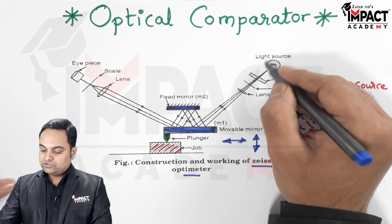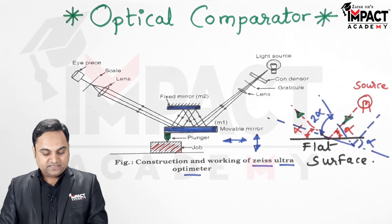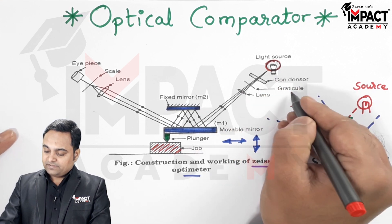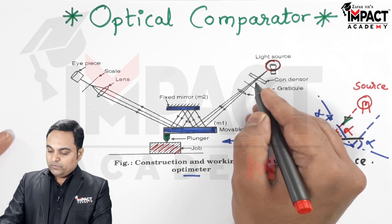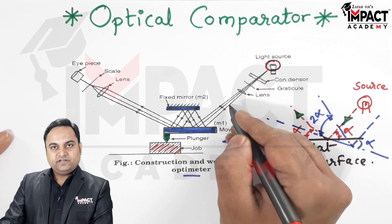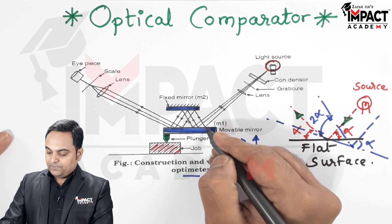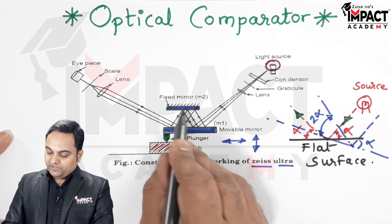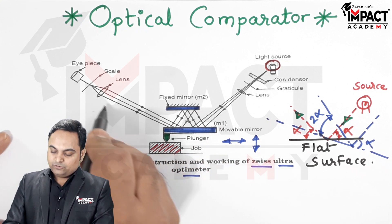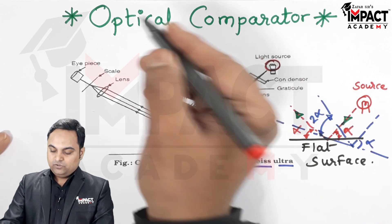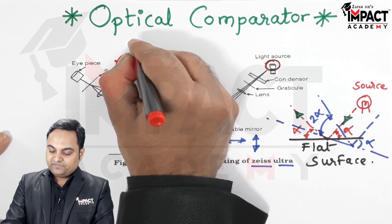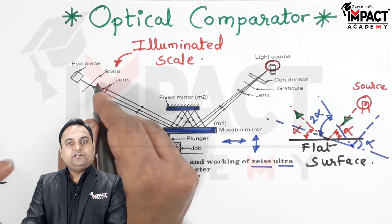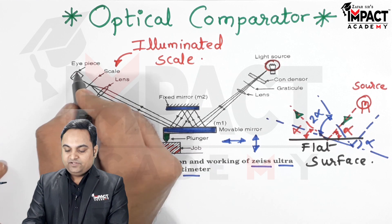There is also a light source through which light is impinged, passing through a condenser, graticule, and lens where the light gets focused and filtered. It is then impinged onto the movable mirror, reflected, and passes to another lens. There is an illuminated scale that shows a reading when light falls on it, and an eyepiece from which the observer takes the reading.